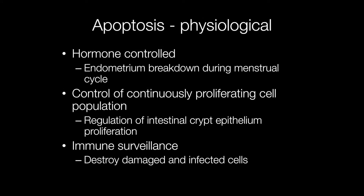One good example of hormone-controlled apoptosis is the breakdown of endometrium during the menstrual cycle. Apoptosis also regulates continuously proliferating cell populations in tissues such as the epithelium of gland crypts in the intestine. And apoptosis plays an essential role in immune surveillance — for example, destruction of damaged and infected cells.